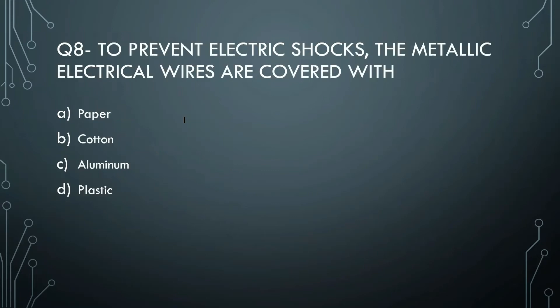To prevent electric shock, metal electric wires are covered with what material? Since our body is a conductor, we need protection from electric shock. The wires in our house - in bulbs and switches - need to be covered. The options are paper, cotton, aluminum, or plastic.